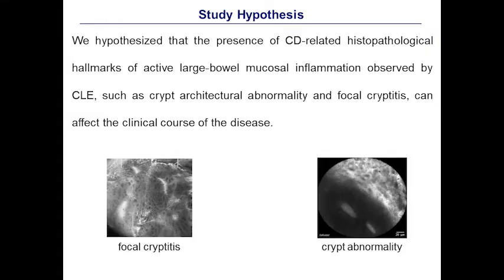At the baseline, we assessed endomicroscopy, Crohn's disease activity index, Crohn's disease endoscopy index of severity, and C-reactive protein values in consecutive Crohn's disease patients. During clinical follow-up, we focused on major clinical outcomes, such as the development of new strictures or fistulas, the need of treatment escalation with biologics, immunosuppressants or systemic steroids, or the need of hospitalization or surgery related to Crohn's disease.